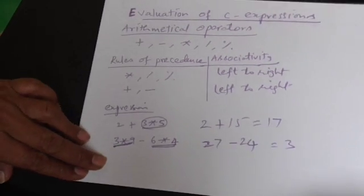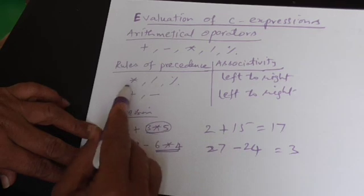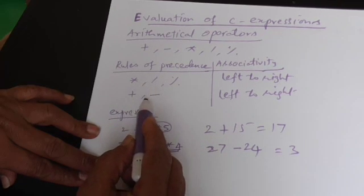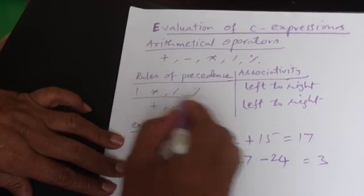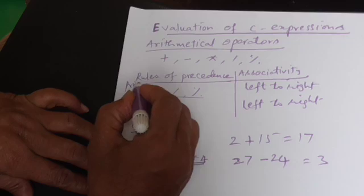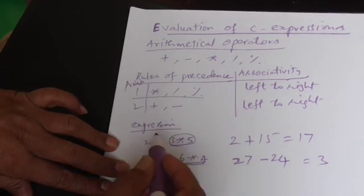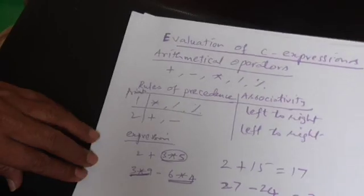The Rules of Precedence says, when you have different types of operators present in a mathematical expression, which operators to be executed first and next. So these are given the first priority, priority number one, and these are given the priority number two. This is how this is evaluated.